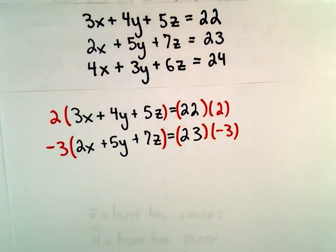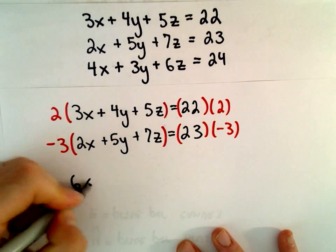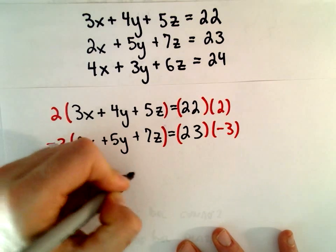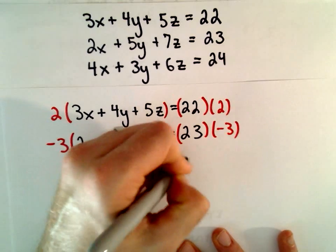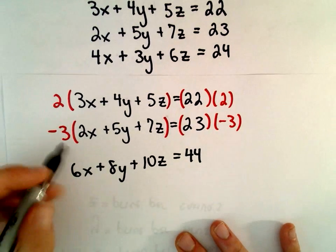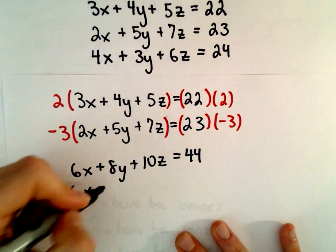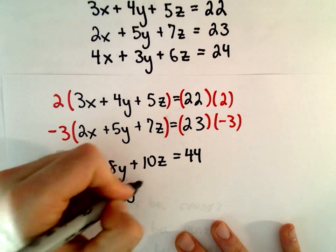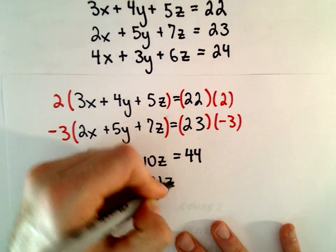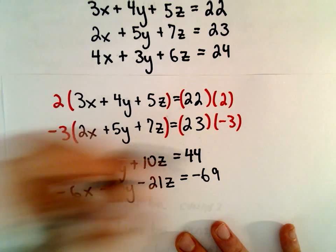So from our first equation, we'll get 6X plus 8Y plus 10Z equals 44. Our second equation, we'll have negative 6X minus 15Y minus 21Z equals negative 69.